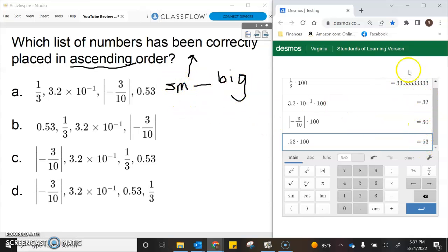The smallest percent here is 30 percent, so this would have to be first. So it's either C or D, which means A and B are out.